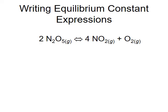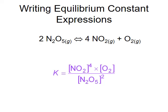Let's do one more equation. Here two dinitrogen pentoxide molecules decompose into four nitrogen dioxide and one oxygen molecule. The equilibrium expression is the concentration of the products raised to their coefficients over the concentration of the reactants raised to their coefficients. That means the product concentration of nitrogen dioxide raised to the fourth power — reflecting the four coefficient on nitrogen dioxide — multiplied by oxygen raised to the one power, divided by the concentration of dinitrogen pentoxide raised to the second power, reflecting the two coefficient.